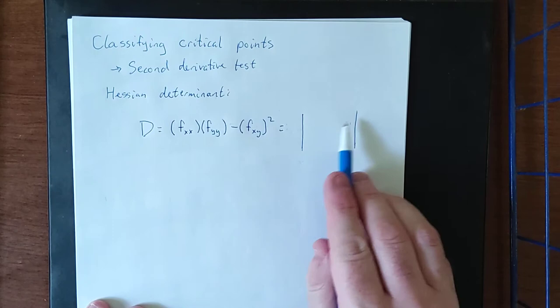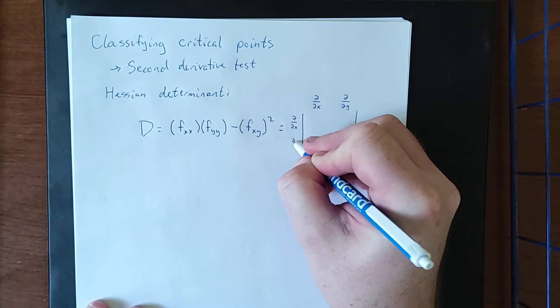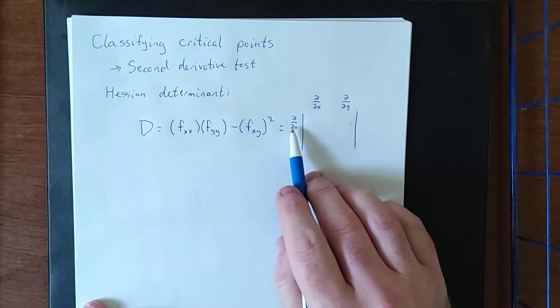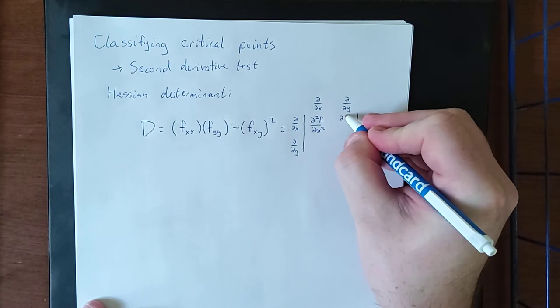Now in these four spots here we are going to be putting derivatives with respect to x and derivatives with respect to y. So in the 1-1 entry, this would be the first column first row, so that would be the second derivative with respect to x. So second derivative of f with respect to x.